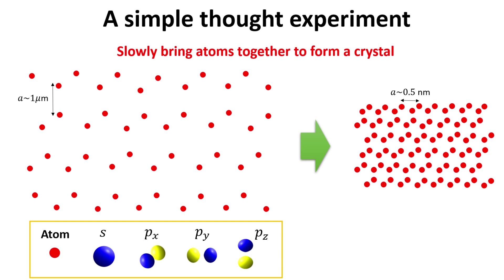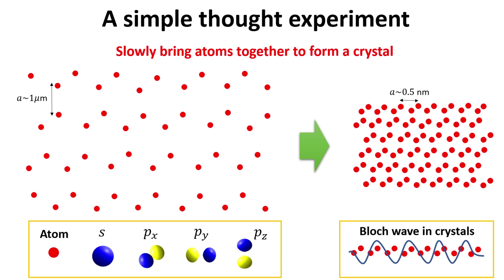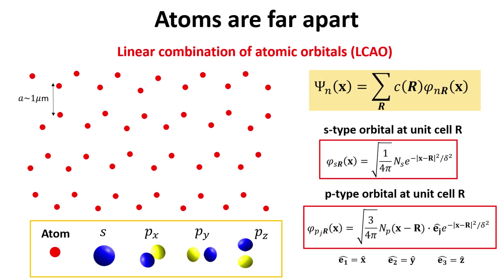Now, when the atoms are brought together to the typical distances seen in real crystals, the atomic wave functions of electrons in adjacent atoms will interfere with each other, resulting in Bloch states with electrons extending throughout the entire crystal as plane waves with spatially periodic amplitude. To describe this transition, we begin with the largely separated hypothetical crystal and write down the wave function for the total system as a linear combination of the orbital wave functions of the individual atoms. The coefficients of the linear combination are functions of the direct lattice vectors only.